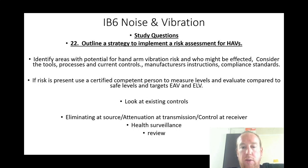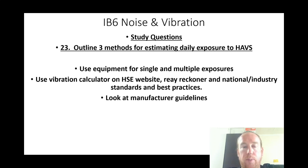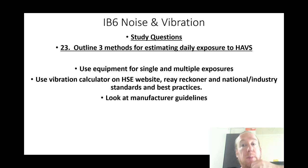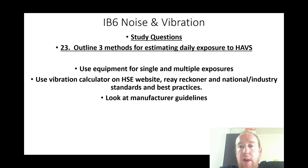If risk is present, use a certified competent person to measure levels and evaluate compared to safe levels and targets. Review existing controls using the hierarchy: eliminate at source, attenuation at transmission, control at receiver, health surveillance, and review. Three methods for estimating daily exposure to HAVs: use equipment for single and multiple exposures, use the vibration calculator on the HSE website (ready reckoner), national industry standards, and manufacturer's guidelines.